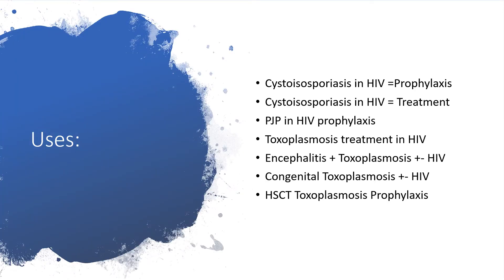Uses of pyrimethamine. When you combine pyrimethamine with some other medications, you can use it for a lot of cases, particularly in HIV-positive patients, either for prophylaxis or for treatment. For example, in cystoisosporiasis in HIV, you can use it for prophylaxis or for treatment.